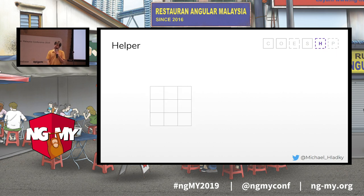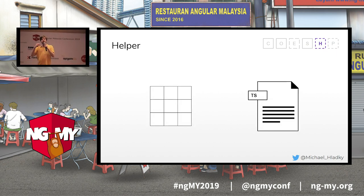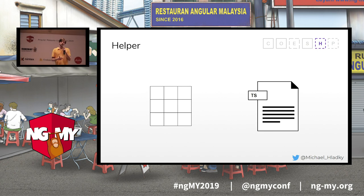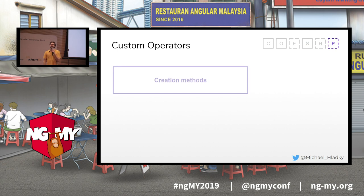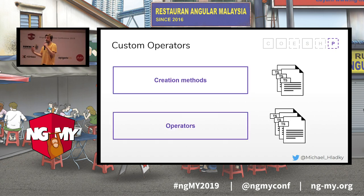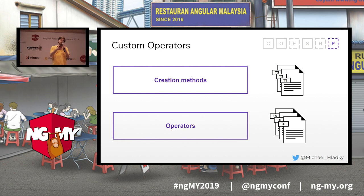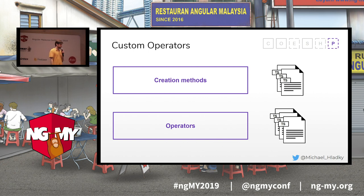Helper functions are all types of functions that are not directly related to my code but I use them a lot — in most cases, I'm able to move them into a separate file. You could name it 'utils' or whatever you want. And of course, if we work a lot with RxJS, we have a lot of custom operators. I group them into static methods in creation functions and in operator functions. For every single creation method or operator, I create a separate file holding one operator per file, and then I organize the rest over a barrel file — index.ts.